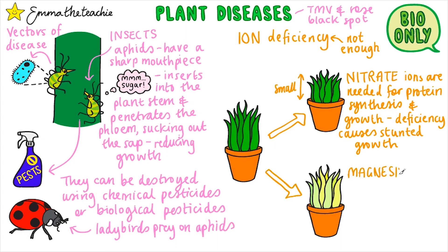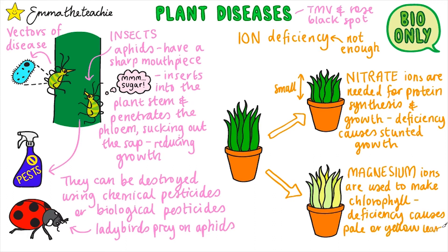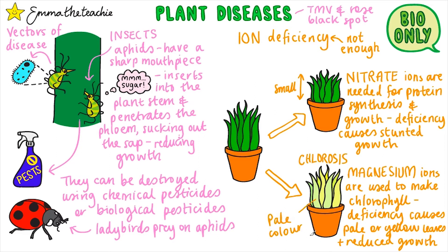Magnesium ions are used to make chlorophyll. When there isn't enough magnesium, less chlorophyll is made and the leaves look pale or yellow-colored. There is reduced growth as a result. This condition is called chlorosis. Knowing about the ions needed for plants to grow at their best allows gardeners and horticulturists to enrich the soil with all of the ions that plants need.